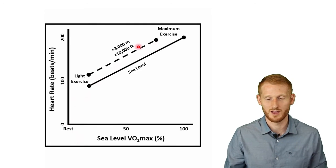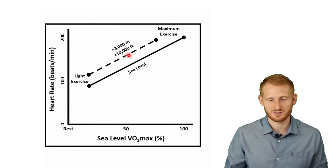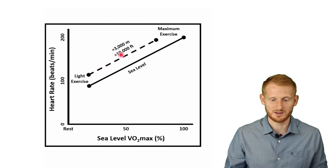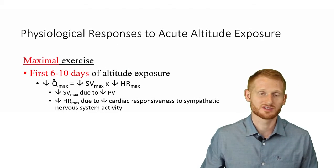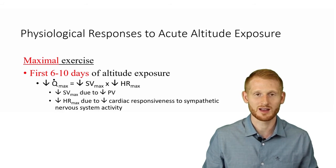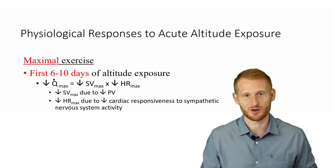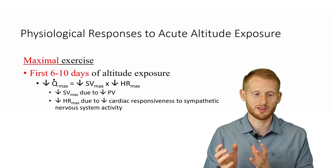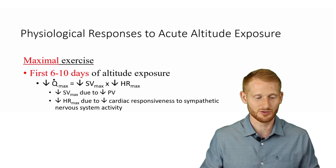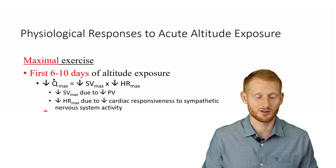Looking at the graph, with increasing exercise intensity we always see an increase in heart rate. At submaximal exercise, we see an elevation in heart rate at altitude compared to sea level, regardless of exercise intensity. With maximal exercise in the first six to ten days, we see a decrease in maximal cardiac output, a decrease in maximal stroke volume, and a decrease in maximal heart rate. Stroke volume and heart rate multiplied together give cardiac output, which is why all three decrease together.